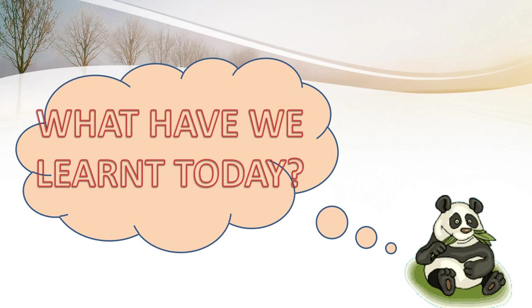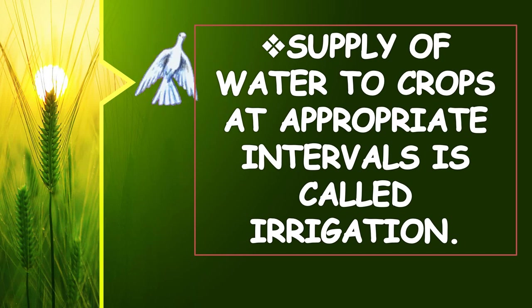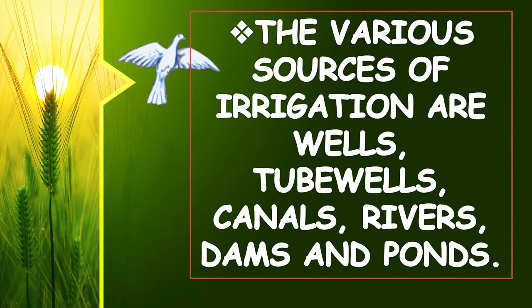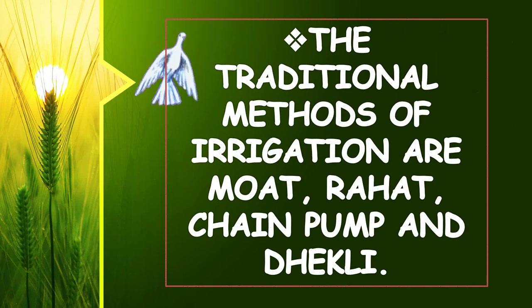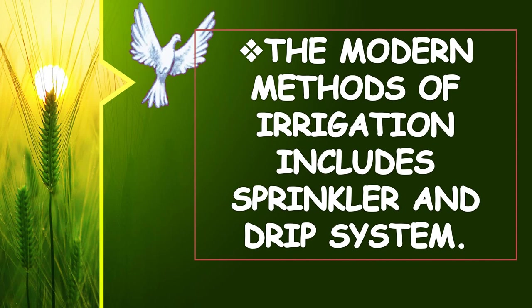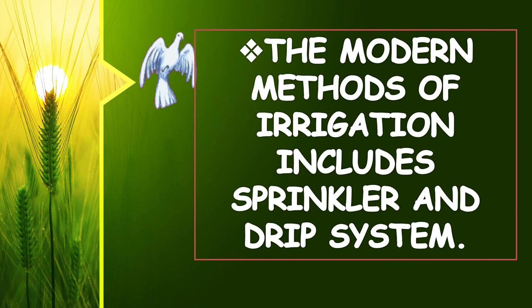Let's see what we have learnt today. Supply of water to crops at appropriate intervals is called irrigation. The various sources of irrigation are wells, tube wells, canals, rivers, dams and ponds. The traditional methods of irrigation are moat, rahat, chain pump and dhekli. The modern methods of irrigation include sprinkler and drip system.